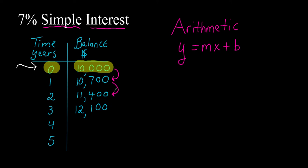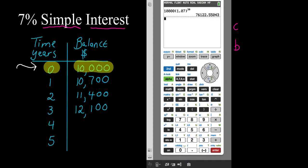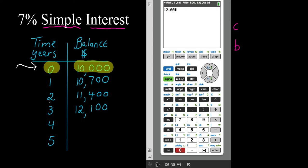Sometimes the numbers are more complicated, so I want to show you the process I go through to figure out that number. I'll bring up my calculator. Let's start with the year three balance — my goal is to find the balance for year four and year five. I'll find a common difference: year three balance minus year two balance, so twelve thousand one hundred minus eleven thousand four hundred, which gives me seven hundred dollars.